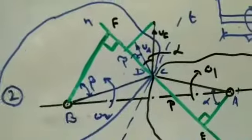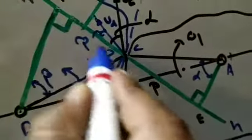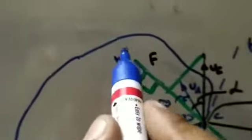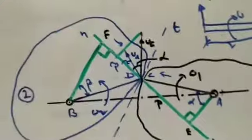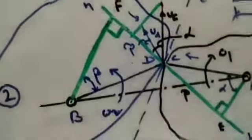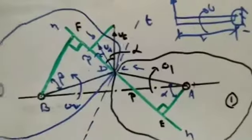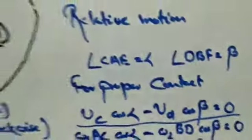If the gears move with constant angular velocity, there should be no displacement along the direction of the normal. Any movement along the normal would cause penetration of one gear into the other. Therefore, the relative velocity along the normal must be zero: vc·cosα − vd·cosβ = 0.